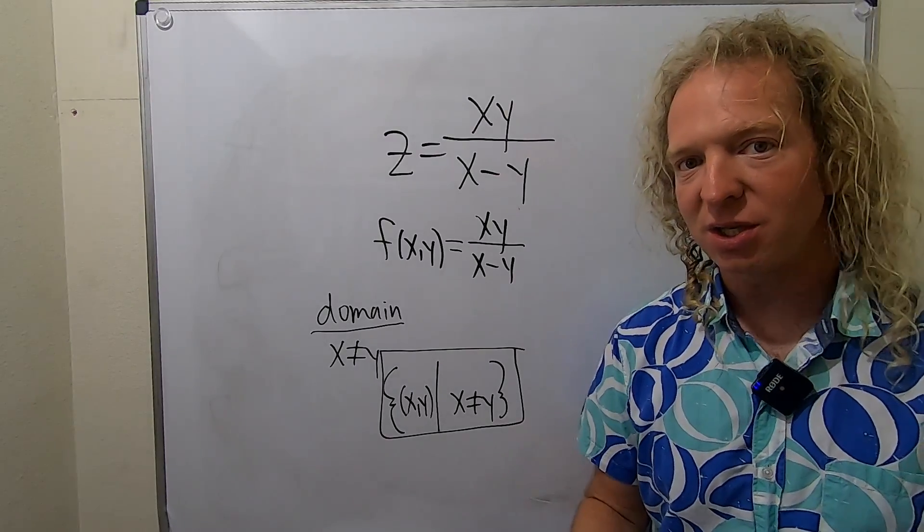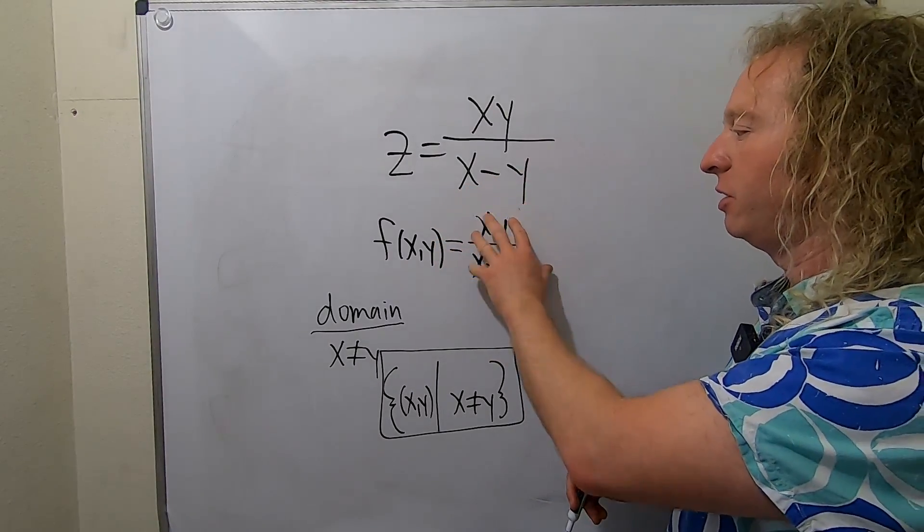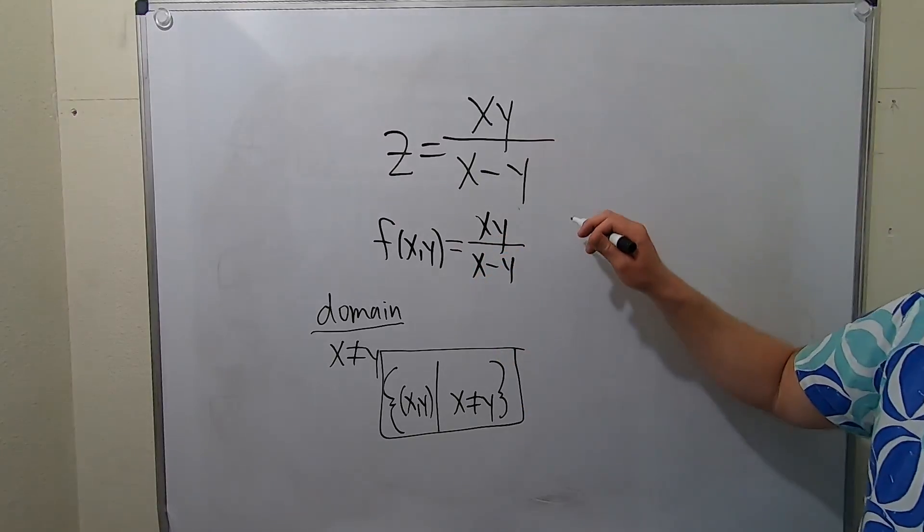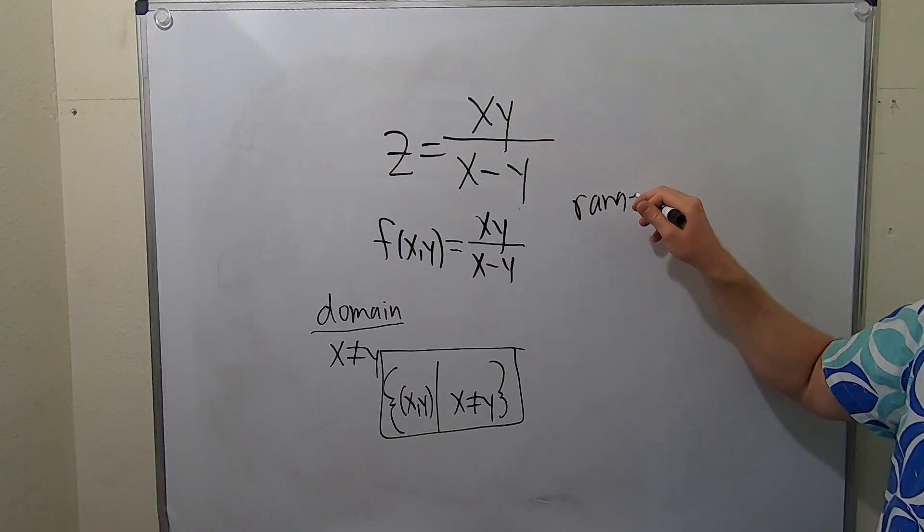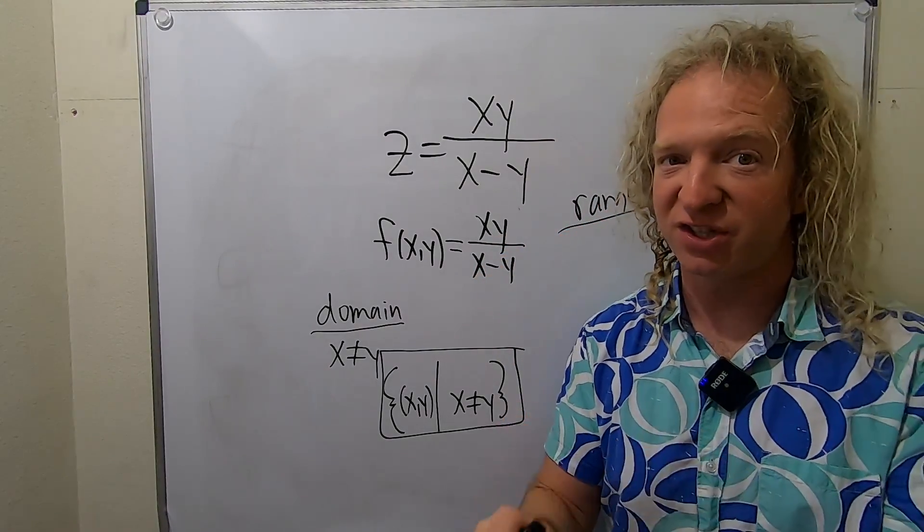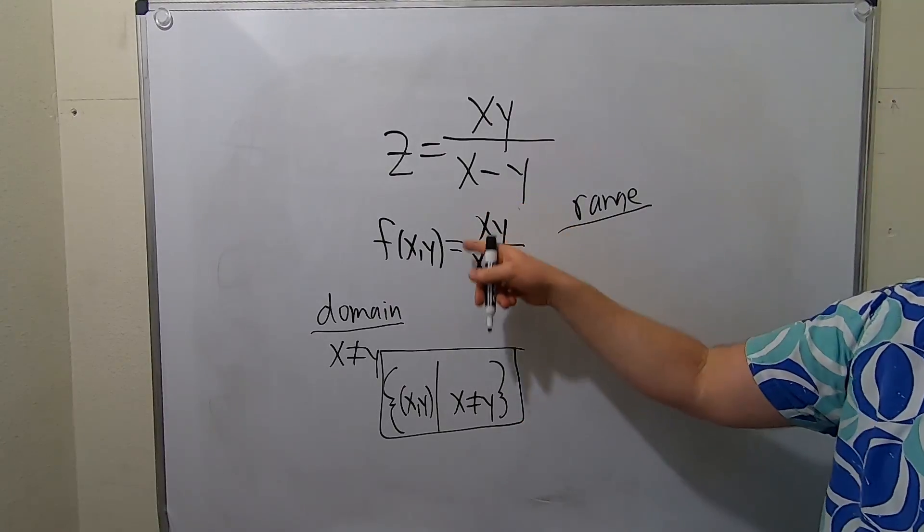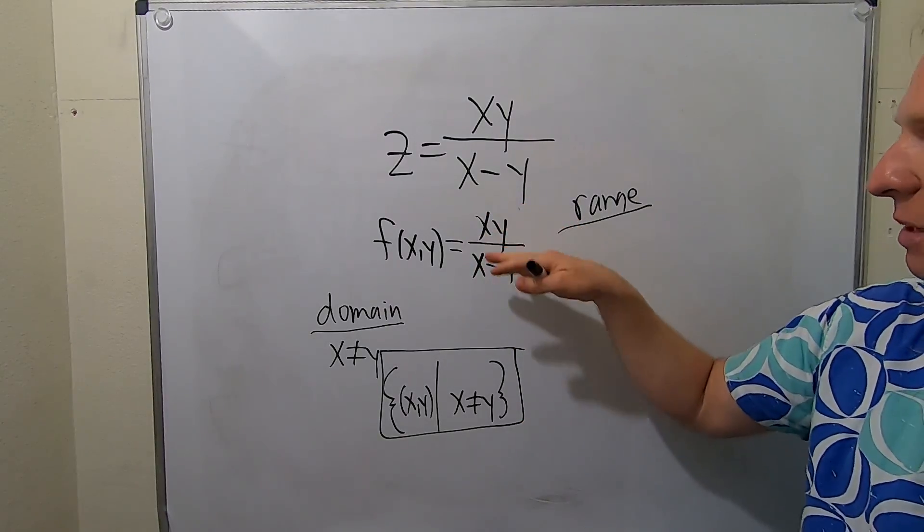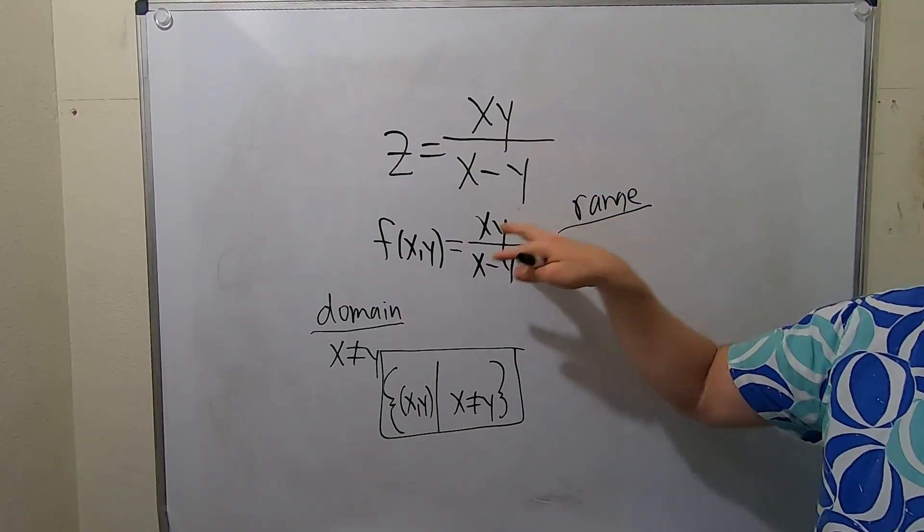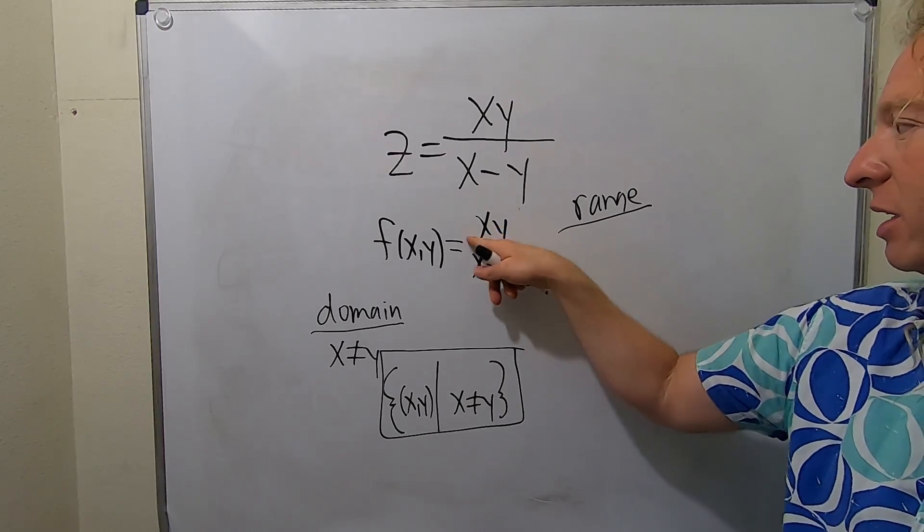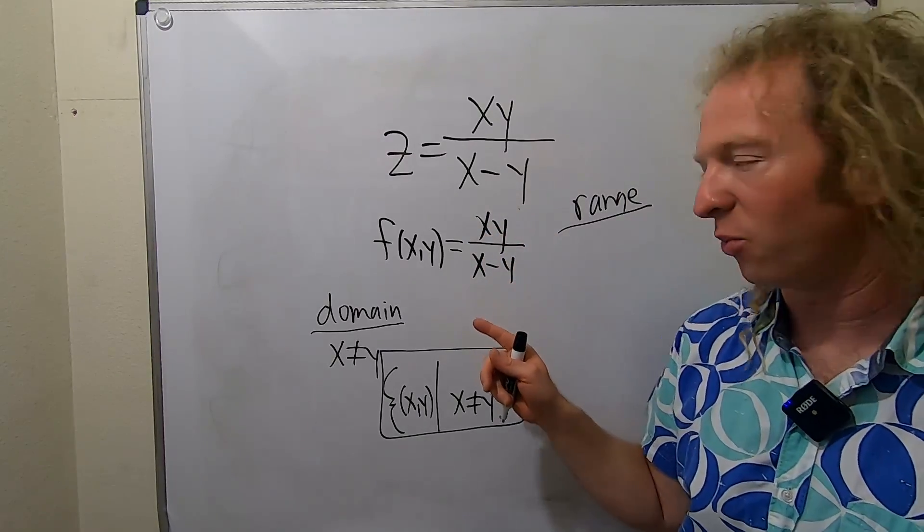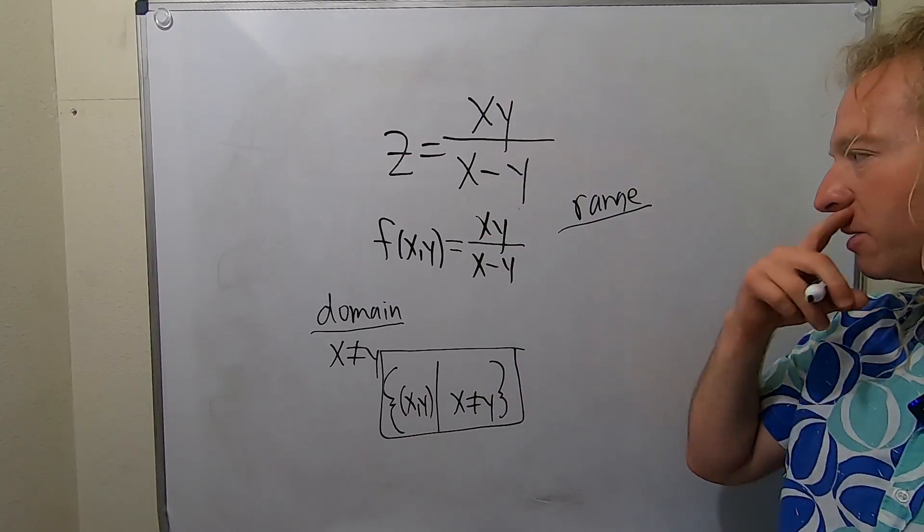For the range, it's the set of all outputs. Plugging numbers in here, you're going to get a real number. So the range consists of elements of real numbers. Anything is fair game here. You should be able to get any possible real number using this expression, because you can plug in anything you like here, as long as x is not equal to y. So the range is simply going to be all real numbers.